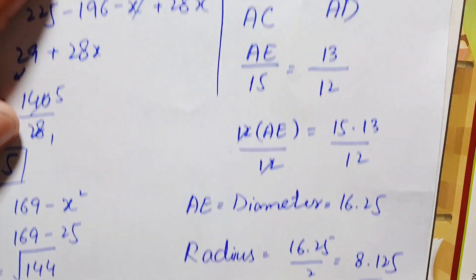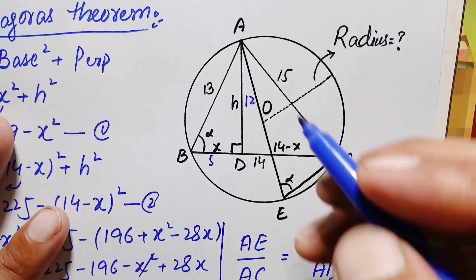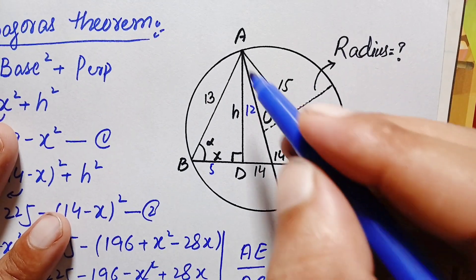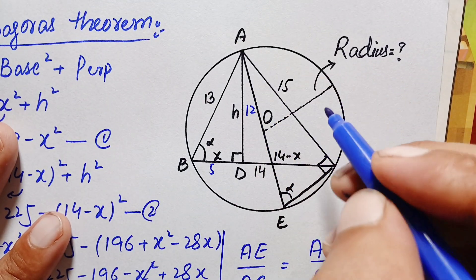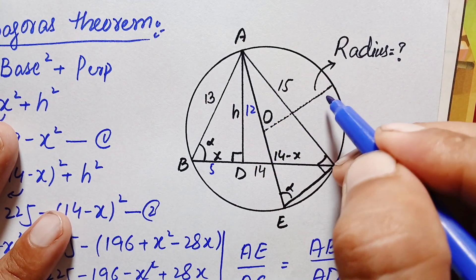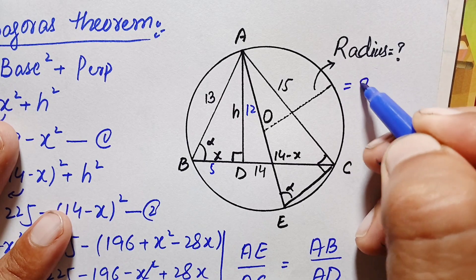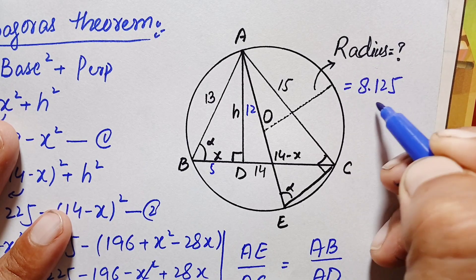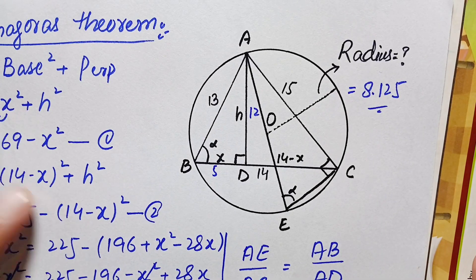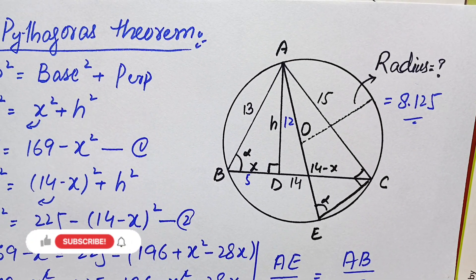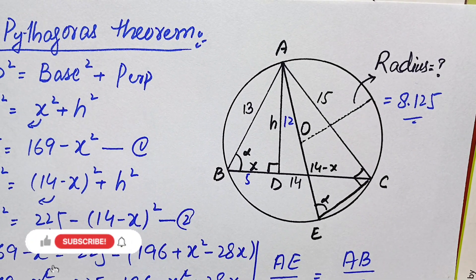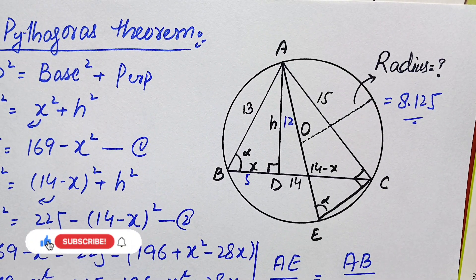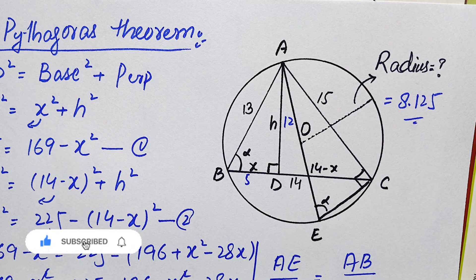Finally, the radius of this given circle, AO, is 8.125 units. This is our final answer. Don't forget to subscribe to the YouTube channel for more interesting step-by-step geometry problems. Thanks for watching.